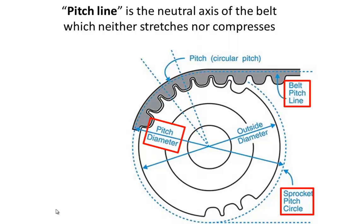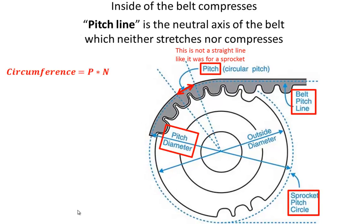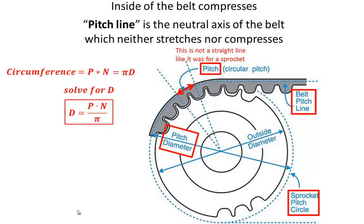Calculating the pitch diameter is straightforward once we recognize that the pitch line becomes curved as it travels around the pulley. We begin by determining the circumference of the pitch circle, which is simply the pitch multiplied by the number of teeth around the entire pulley. We also recognize that circumference equals pi times pitch diameter. Solving for d, we obtain the equation: d = (pitch × number of teeth) / pi.